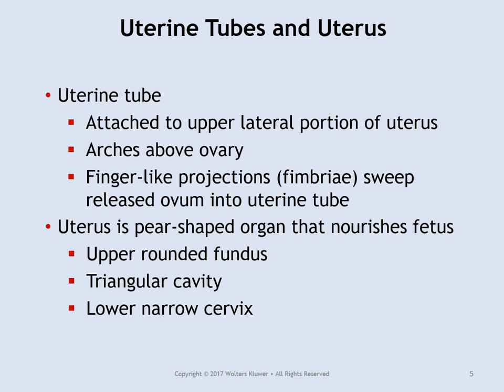From the ovary, the egg cell will travel into the uterine tube — commonly known as the fallopian tube, named after the man who discovered it. There's a push to move away from eponymous names since they don't tell you anything about the structure. The uterine tube attaches to the upper portion of the uterus and arches over the ovary. At the end are finger-like projections called fimbriae that catch the egg cell after ovulation and guide it into the tube. From there the egg cell travels to the uterus.